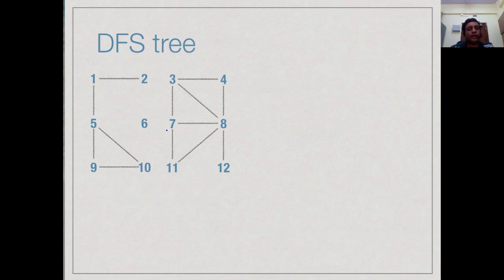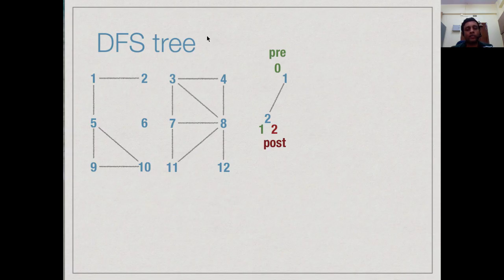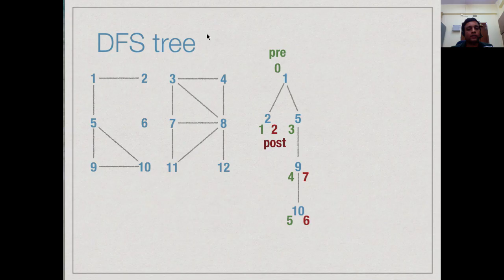Now let's compute pre and post numbers using DFS. Starting DFS at vertex 1, we enter at step 0 (pre[1]=0). The first neighbor is 2, which gets pre[2]=1; since 2 has no further successors, we exit at post[2]=2. Back at 1, we explore neighbor 5 at time 3, then move to vertex 9 at time 4, then to 10 at time 5. Node 10 has no further neighbors, so post[10]=6; post[9]=7. Back at 5, no further neighbors, so we exit 5, then exit 1 at step 9, completing processing of this component.